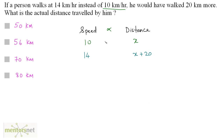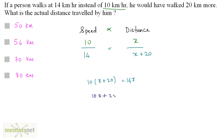We have a ratio that is directly proportional to the other ratio, so we can directly equate these ratios. We get 10 times (x plus 20) equals x times 14, so 10x plus 200 equals 14x. Therefore, 14x minus 10x equals 4x, so 200 equals 4x, and x equals 50 kilometers.